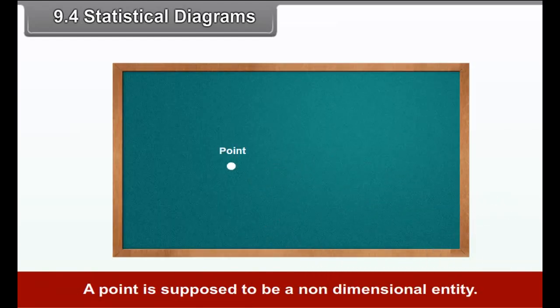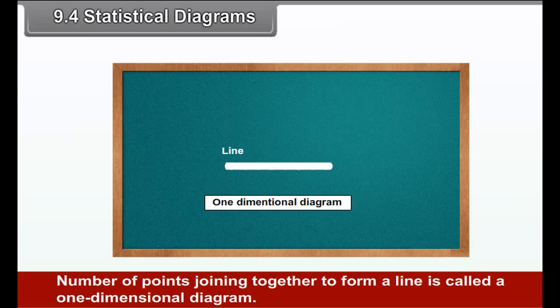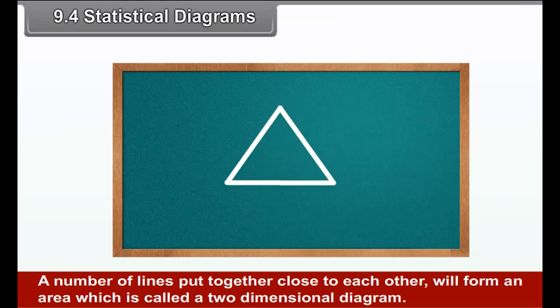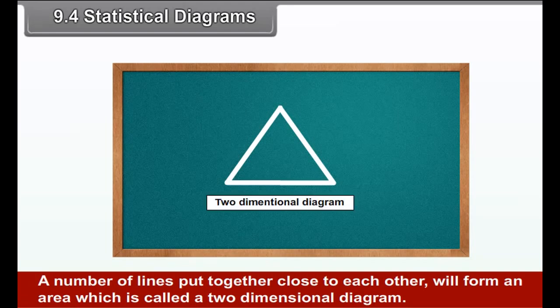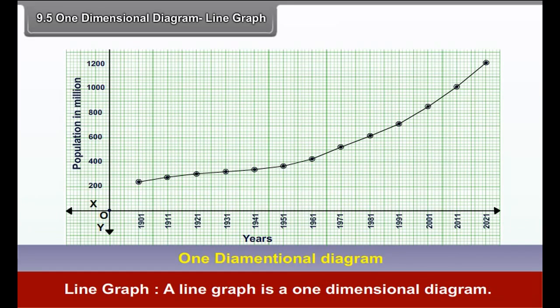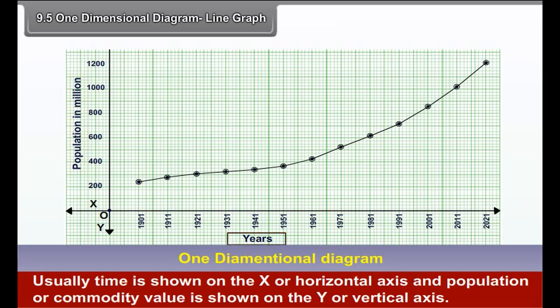9.4 Statistical diagrams. Statistical diagrams represent statistical data. Everything that exists has some dimension. Things can have one, two, three or more dimensions. Length, area and volume of an object are measured with one, two and three dimensions. A point is supposed to be a non-dimensional entity. Number of points joining together to form a line is called a one-dimensional diagram. A number of lines put together close to each other will form an area which is called a two-dimensional diagram.